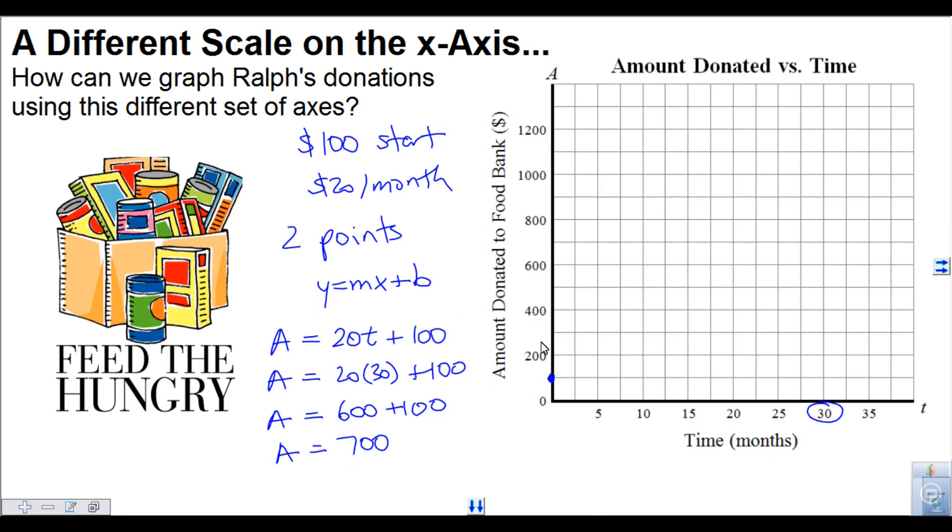So whether you make an equation or not, it doesn't matter. I made an equation just to throw in a little bit more extra stuff about linear relations. Anyway, at 30 months it's $700, so I can put a dot right there.